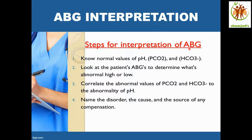Steps for interpretation of ABG. First, know the normal values: pH 7.35 to 7.45, PCO2 35 to 45, and bicarbonate 22 to 30. Second, look at the patient's ABG to determine what is abnormal — high or low. Third, correlate the abnormal values of PCO2 and bicarbonate to the abnormality of pH.